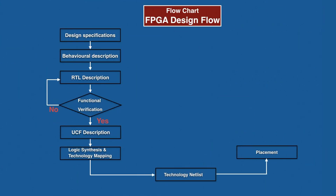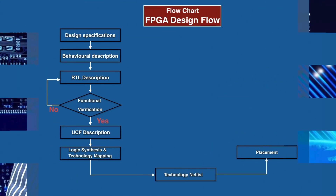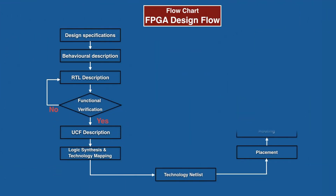The eighth stage in the flow chart of FPGA design flow is placement. In the placement stage, the gates in the netlist of a design are placed on the physical reconfigurable area of FPGA. Placement is a very important and time-consuming stage to obtain optimal placement, as optimized placement enhances the speed of a design.